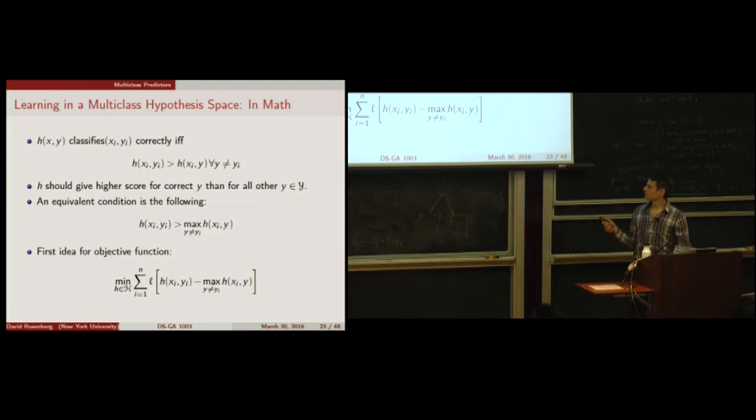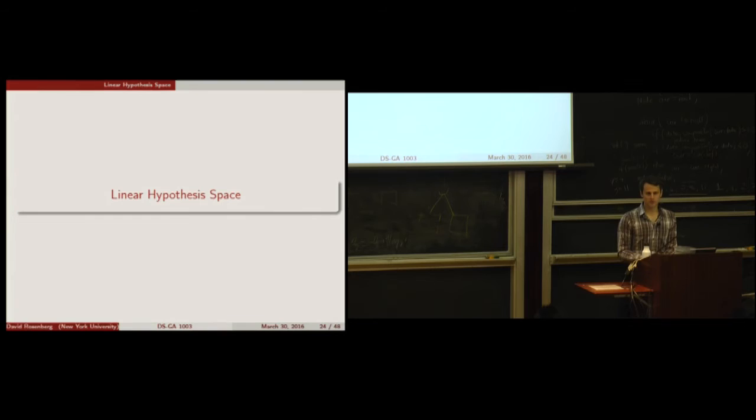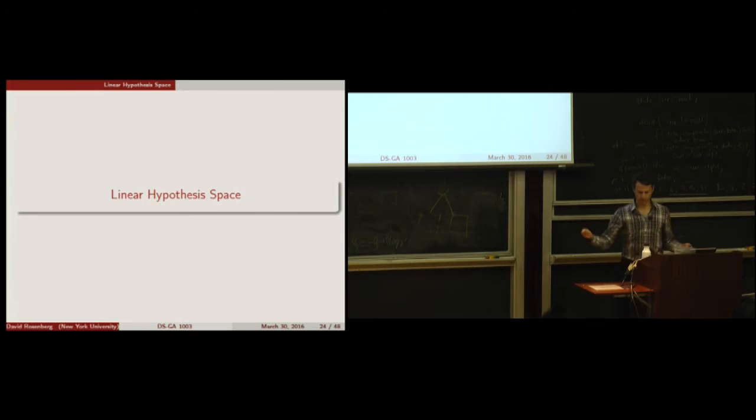If we want a good objective function, we can think of the difference between the correct score and the best incorrect score. A loss function should penalize when this difference is small and be small when this difference is big. This reminds us of hinge loss — hinge loss is small when the margin is big and large when the margin is negative. So we might apply something like a hinge loss or margin-based loss to this object.